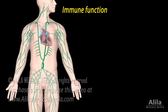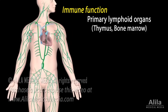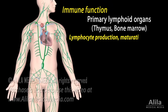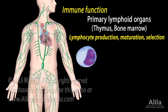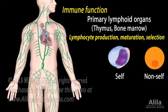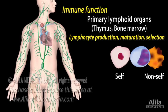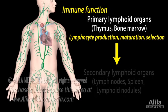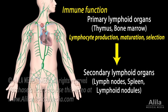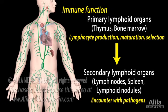The lymphatic system also includes lymphoid organs. Primary lymphoid organs — the thymus and bone marrow — are the sites of lymphocyte production, maturation, and selection. Selection is the process in which lymphocytes learn to distinguish between self and non-self, so they can recognize and destroy pathogens without attacking the body's own cells. Mature lymphocytes then leave the primary for the secondary lymphoid organs — the lymph nodes, spleen, and lymphoid nodules — where they encounter pathogens and become activated.